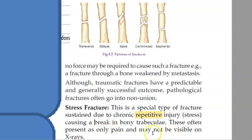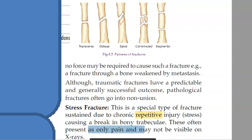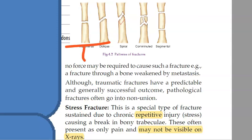Stress fractures will not be visible on x-ray, and the person will only have pain. So based on etiology, you learned that there can be a traumatic fracture, a pathological fracture, and a stress fracture — three fractures based on etiology. Now there are many other classifications.